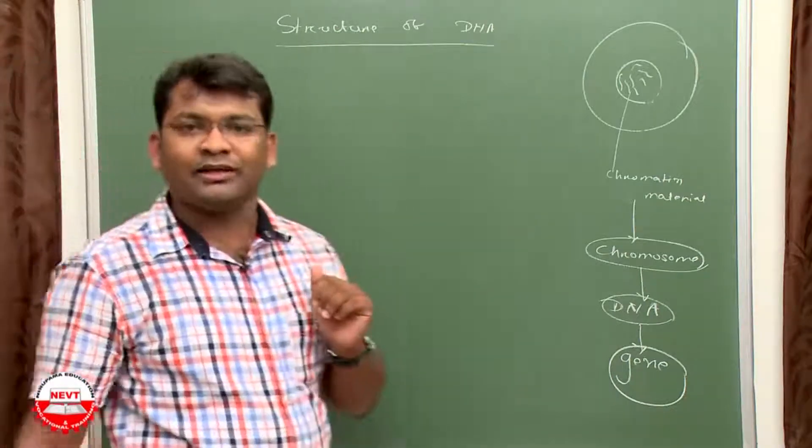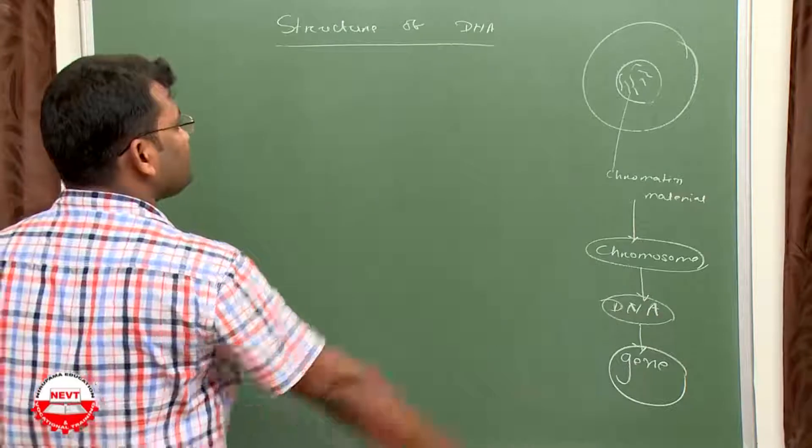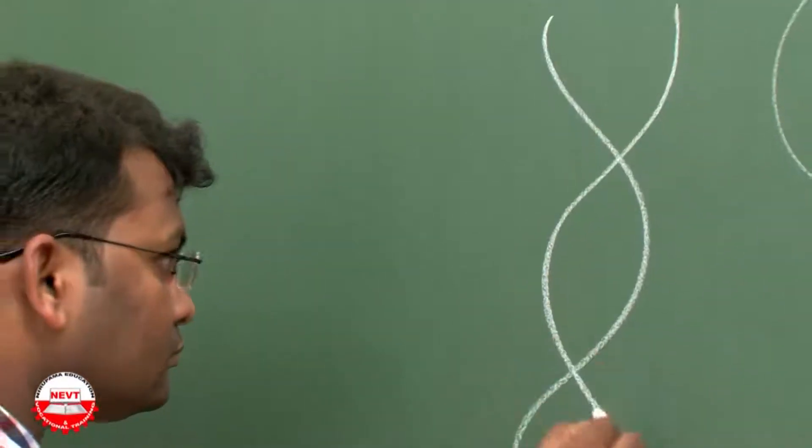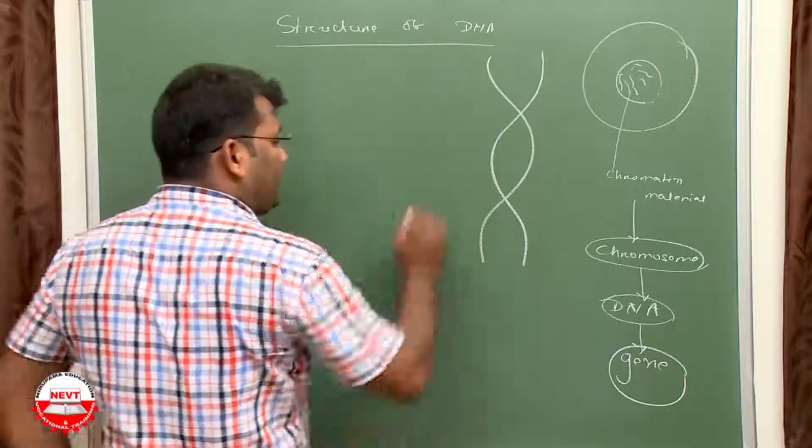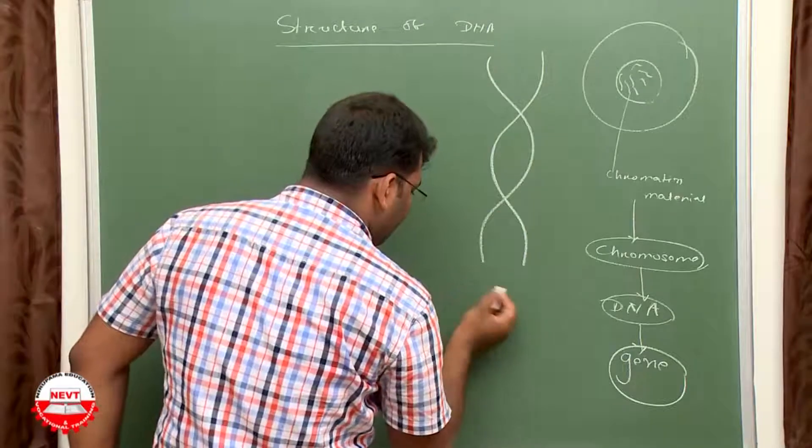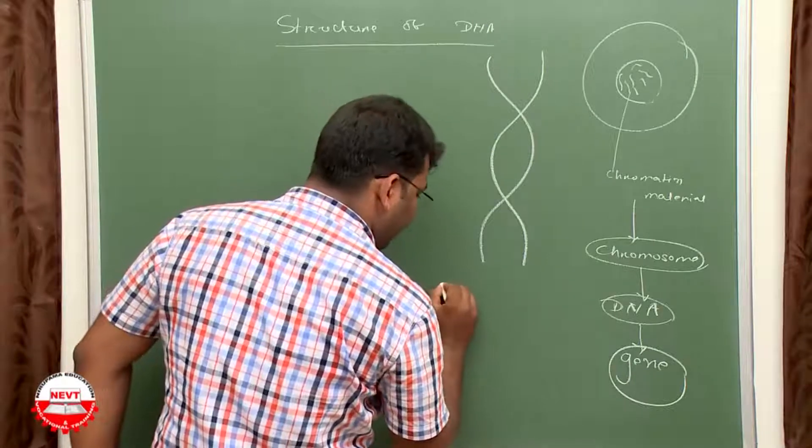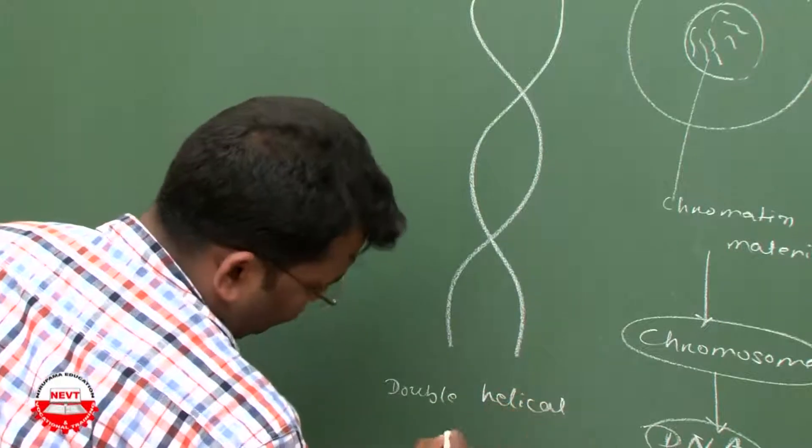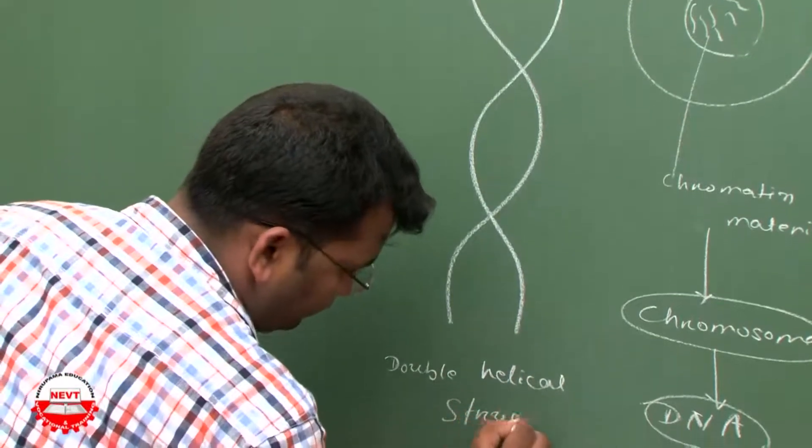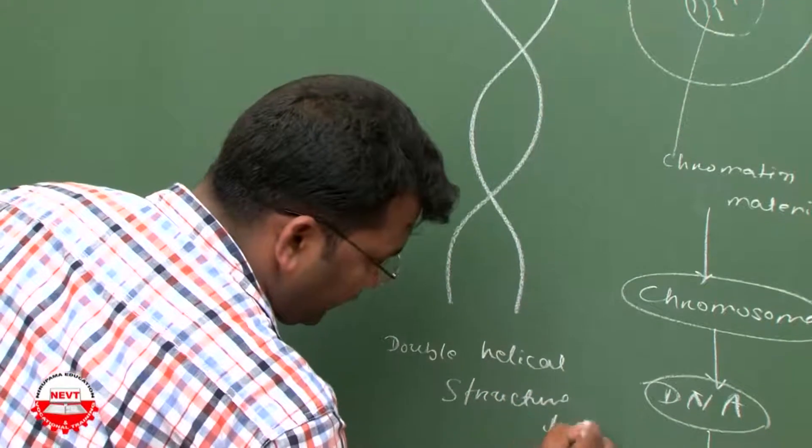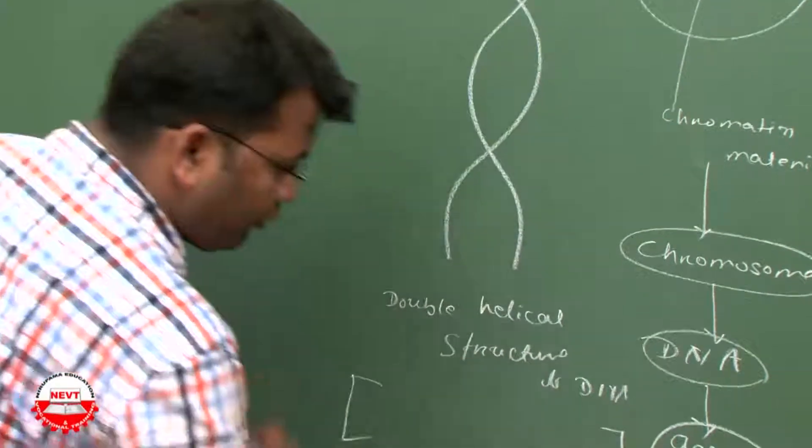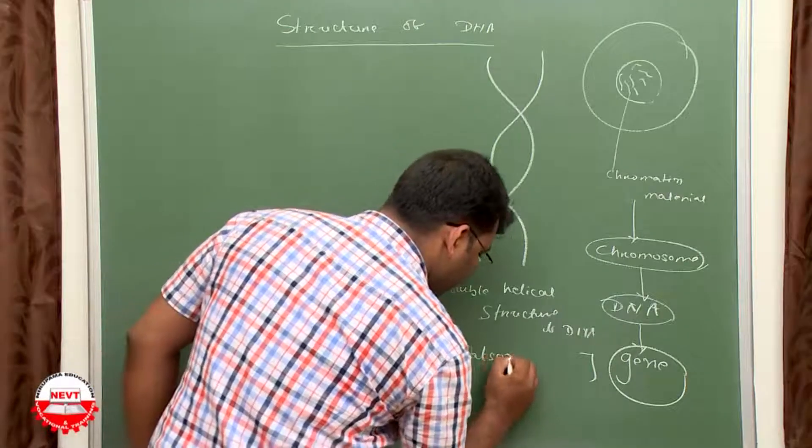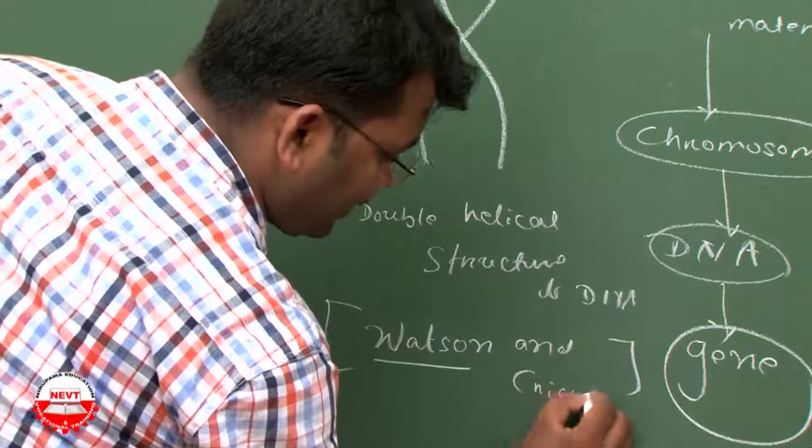This structure was given by Watson and Crick, the model of DNA helical structure. This is a DNA structure, called the double helical structure of DNA. It was given by Watson and Crick who won the Nobel Prize.